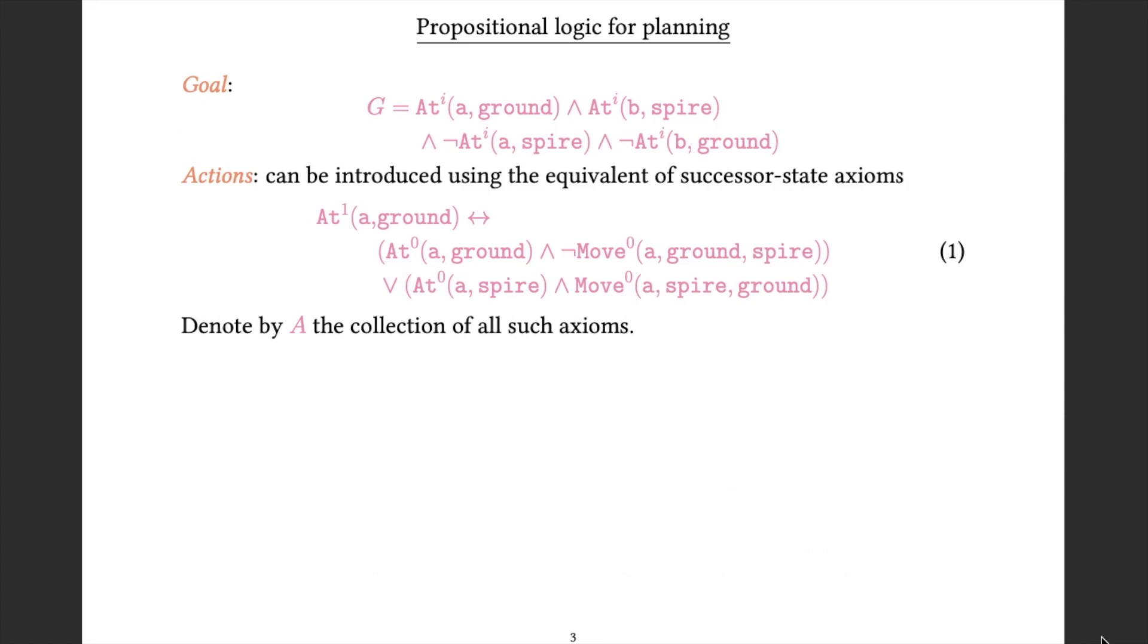The superscripts that I'm putting on these names indicate which step we're at in the plan. So my goal is going to look like the sentence I have here. G equals at some step i, A is on the ground, at some step i, B is on the spire, at some step i, A is not on the spire, and at some step i, B is not on the ground. Because these are fixed proposition names, if we want to express this goal at a bunch of different times, we will need a bunch of different copies where the i has the times that we're interested in substituted.